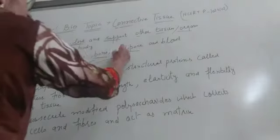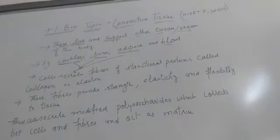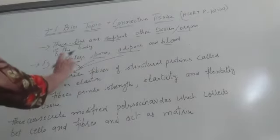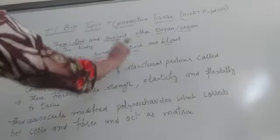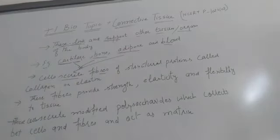Then adipose and blood. These are the four types of connective tissues in your syllabus. Now out of these four tissues, these three tissues - cartilage, bone and adipose - they will secrete fibers. These three types of tissues, they will secrete fibers of structural proteins.